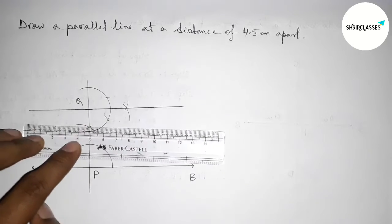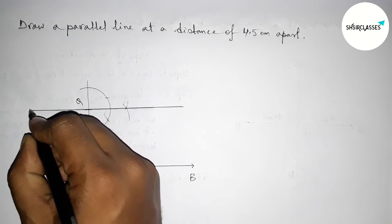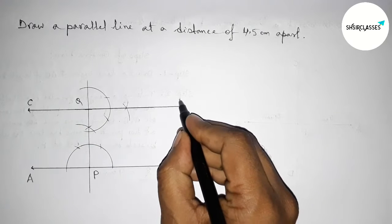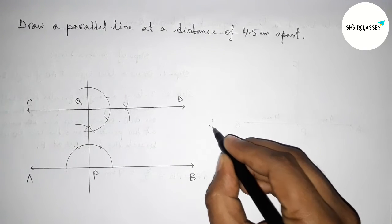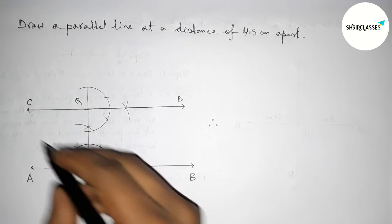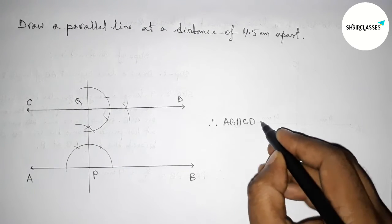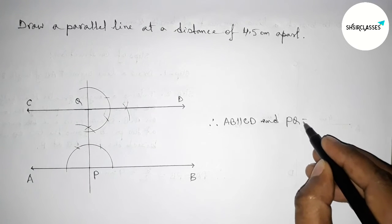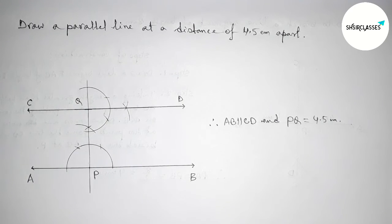Taking arrow marks on both sides and labeling the points C and D. From this picture we can say that AB is parallel to CD, and the distance PQ equals 4.5 centimeters. That's all, thanks for watching.